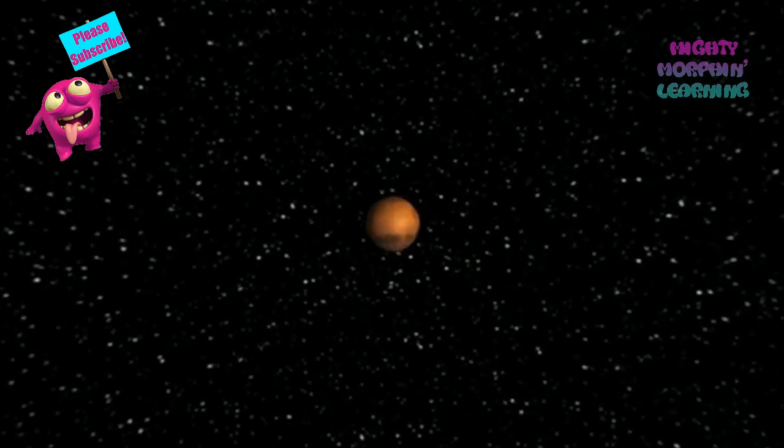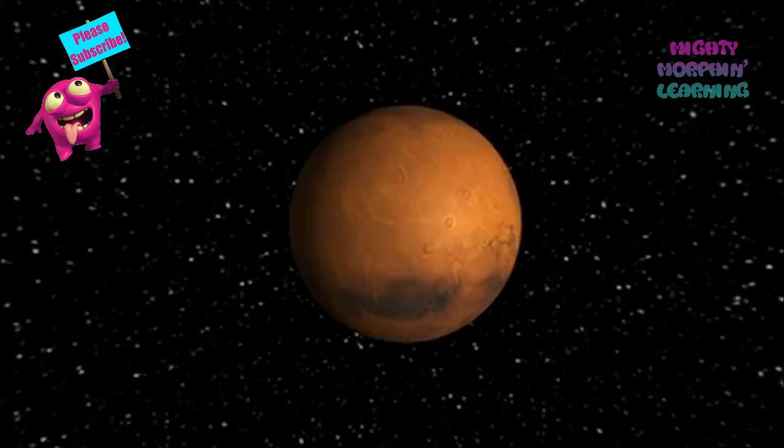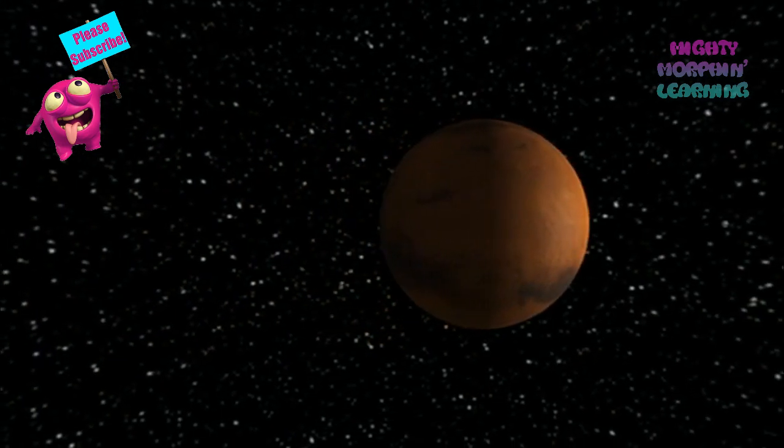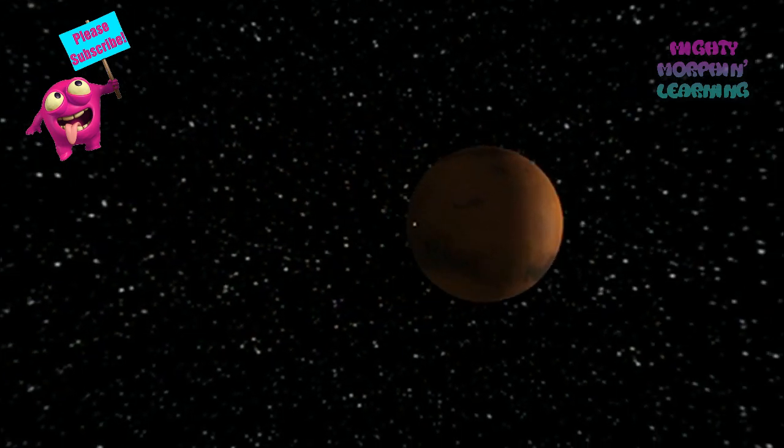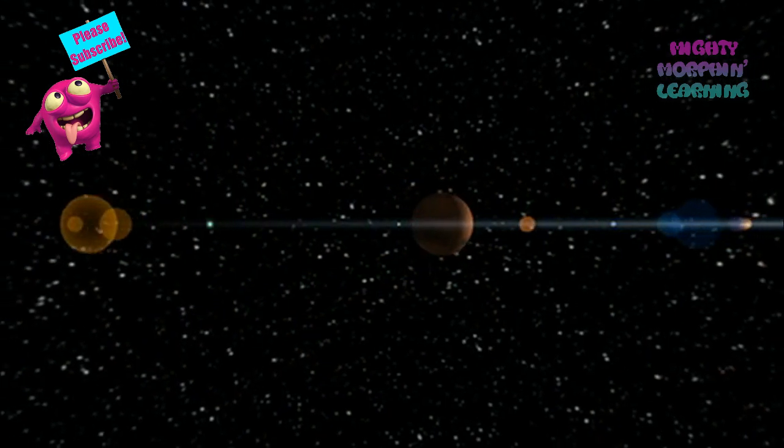The next planet is Mars, which has a red, dusty landscape. Mars was named after the Roman god of war, and has two moons. It also has the largest volcano in the solar system.